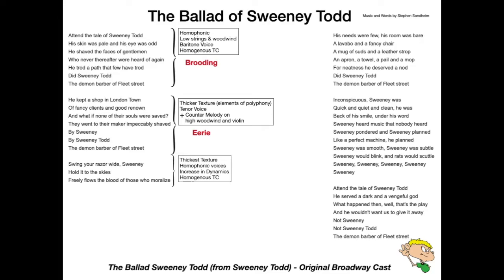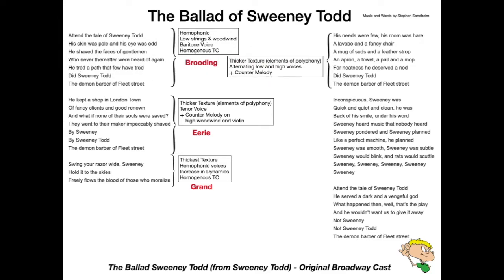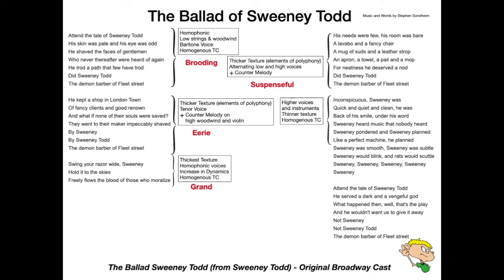And the biggest part of the song — the thickest texture — is the 'Swing your razor wide, Sweeney' section. It's homophonic voices with an increase in dynamics and homogenous tone colour — very grand. Then he brings it right back down to a similar texture to the second stanza, but now alternating between high and low voices. We have a suspenseful character — we're moving, not quite sure where we're going, who's singing, who's the solo, what's going to happen. Then a complete change: thinner texture, higher voices and instruments, still homogenous, everyone sitting in their same range. Very creepy.